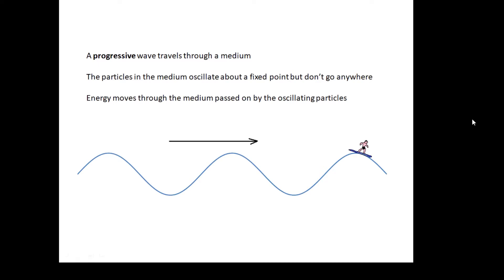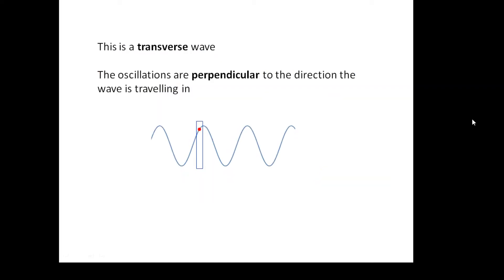The water just moves up and down, but the wave travels along taking energy. Two types of waves: transverse and longitudinal. In a transverse wave, the oscillations are perpendicular to the direction the wave is traveling. Transverse means perpendicular.